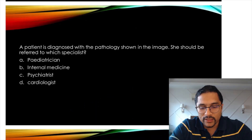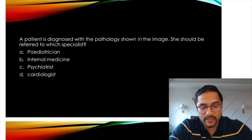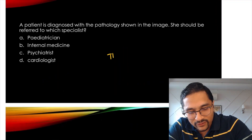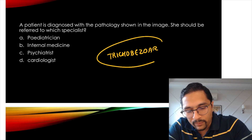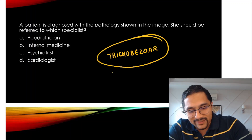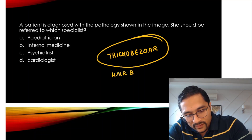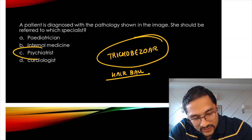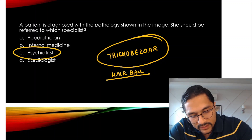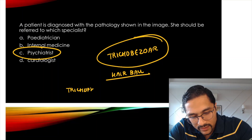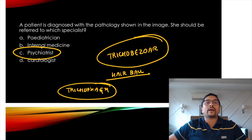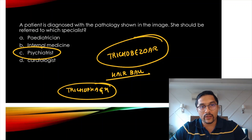A patient is diagnosed with the pathology shown in the image — she should be referred to which specialist. The image was of a trichobezoar, which is a hair ball inside the stomach. This is a psychiatric ailment: trichophagy means the patient starts eating their own hair, which forms into a hair ball called a trichobezoar. This question has been asked previously in the exam.